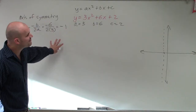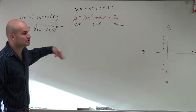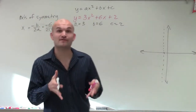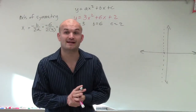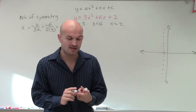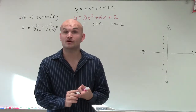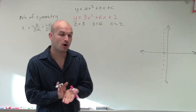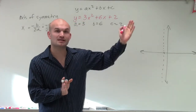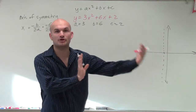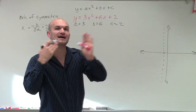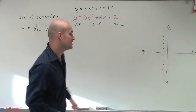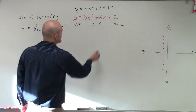Now that I've found the axis of symmetry, remember it's very important because our vertex goes through the axis of symmetry. Also, all the points to the left of the axis of symmetry can be reflected over the axis to create the corresponding points on the right.